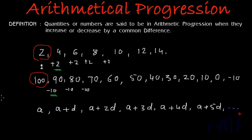So this is the generalized form of an arithmetic progression where a is the first term and d is called common difference. So this is the generalized form of the arithmetic progression.